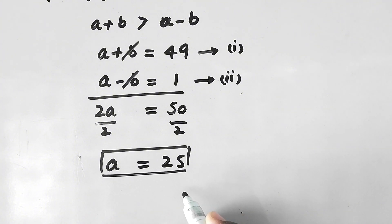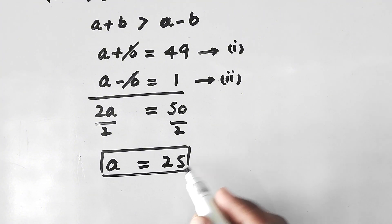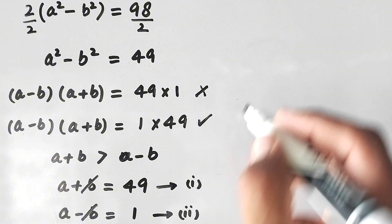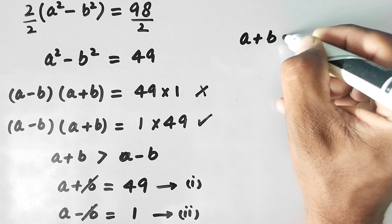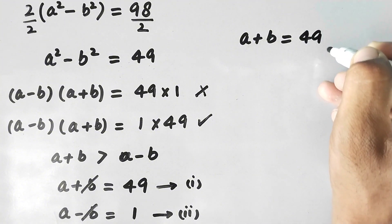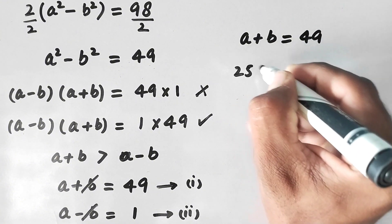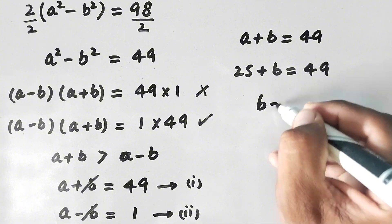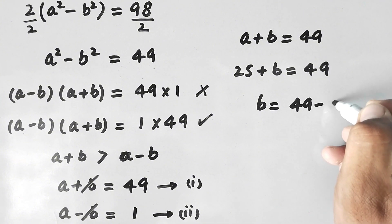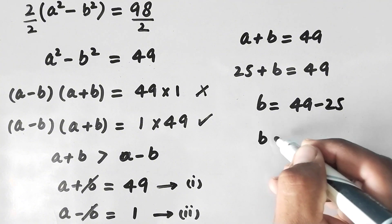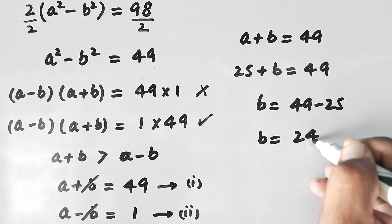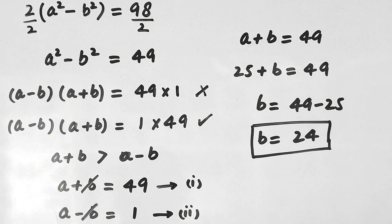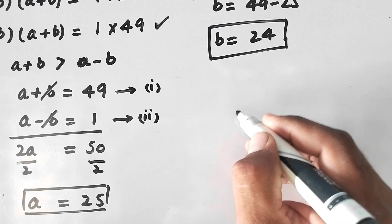Now we find the value of b using equation 1: a plus b equals 49. Substituting a equals 25, we get 25 plus b equals 49, so b equals 49 minus 25, which gives b equals 24.